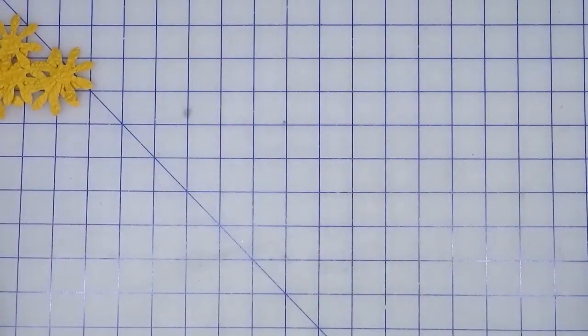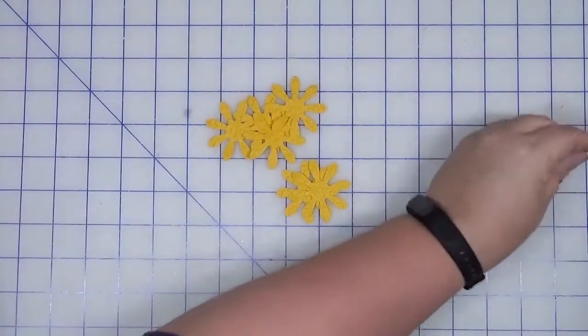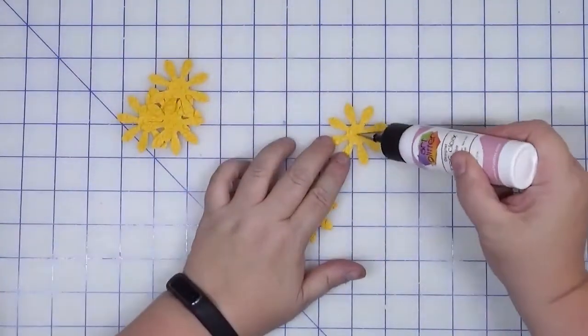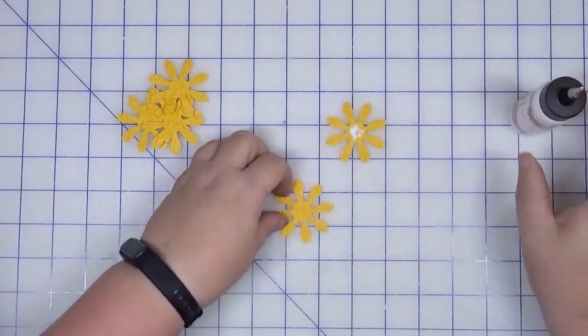We're going to take our glue and we're going to do the exact same thing. We're just going to layer these up and stagger them.